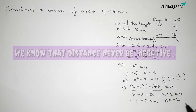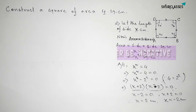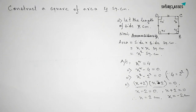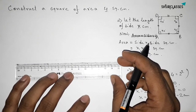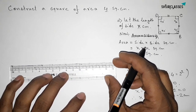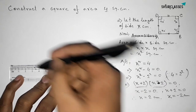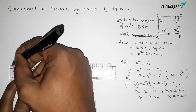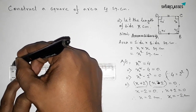We know that distance can never be negative, so we cannot take x equals minus 2 centimeters. Therefore we take x equals 2 centimeters to construct this square. First, we draw a line segment of length 2 centimeters — starting at 0 and ending at 2 — and label the endpoints A and B.